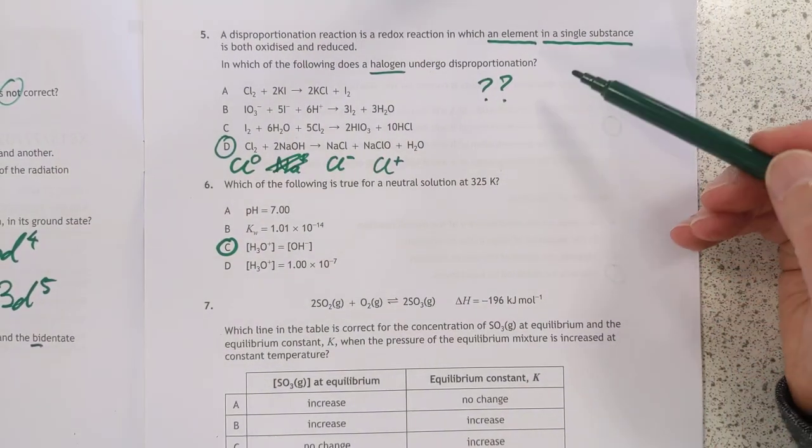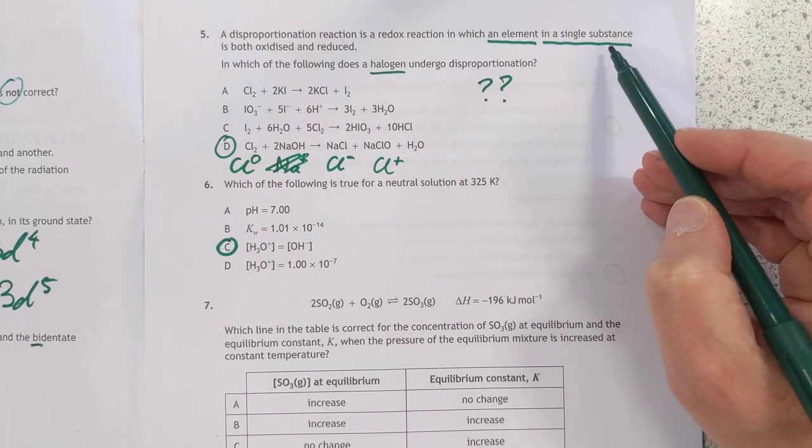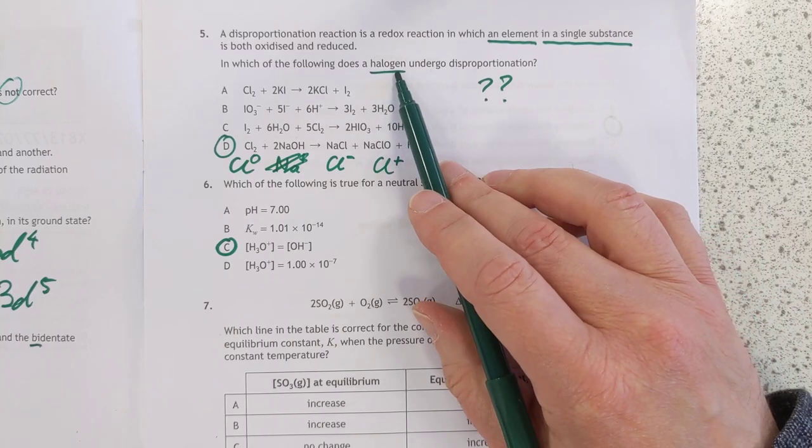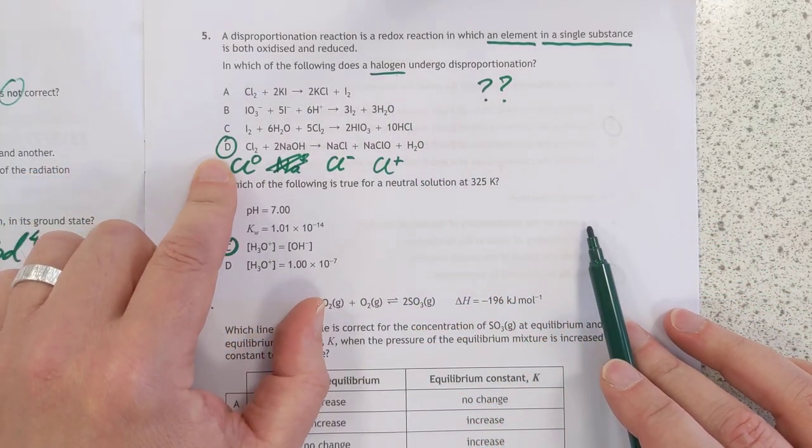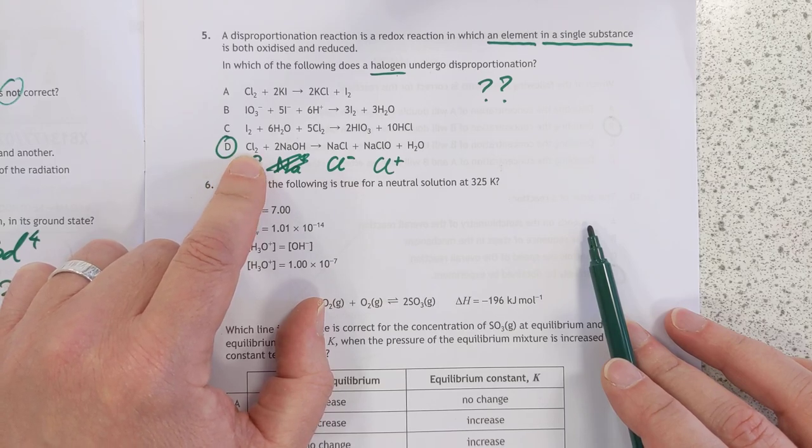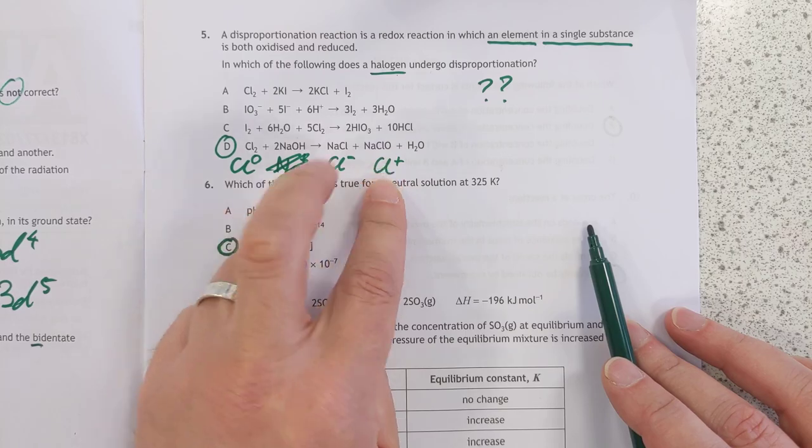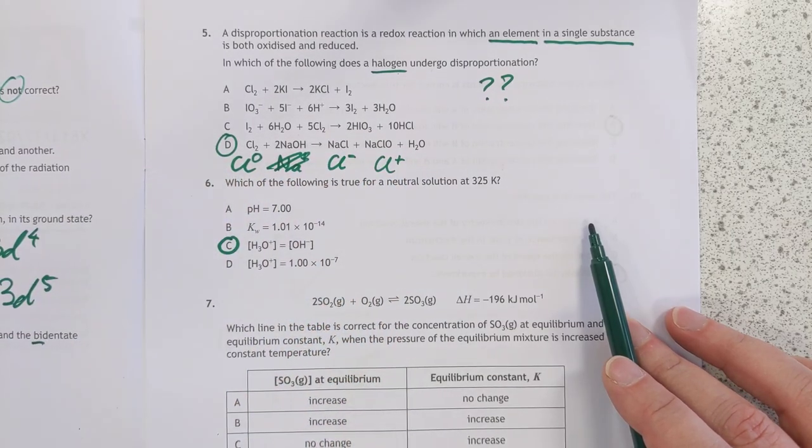Number 5. It took me a while to get this one. I was puzzled on this one. An element in a single substance is both oxidized and reduced. It's a halogen. So, I was being stupid, because eventually I realized that for D, chlorine starts off with an oxidation number of 0, and it ends up being minus 1 and plus 1 in two different substances. So, the answer, I think, is D.